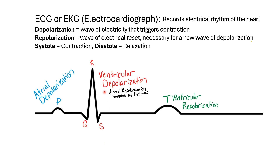Another thing students generally ask is: depolarization and repolarization — typically when we see these on a graph, their direction is opposite, as you would expect, because the words are opposite. The reason they're not opposite here has to do with the way the electrodes are set up and how the waves of electricity are moving. Just take note that in this instance, repolarization and depolarization are moving in the same direction, and know it has to do with how they're taking the measurement.